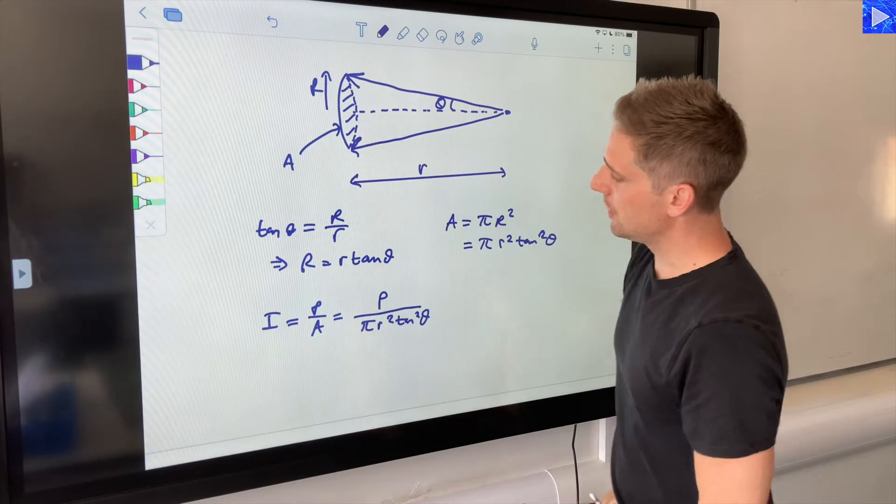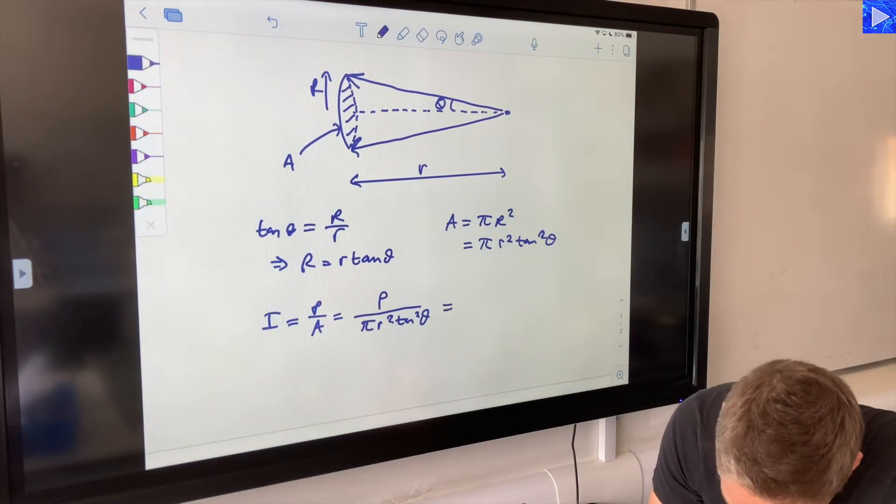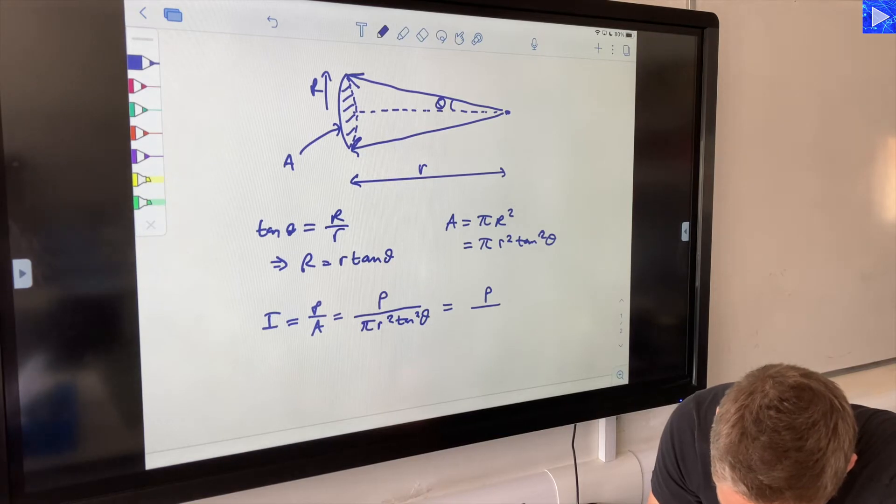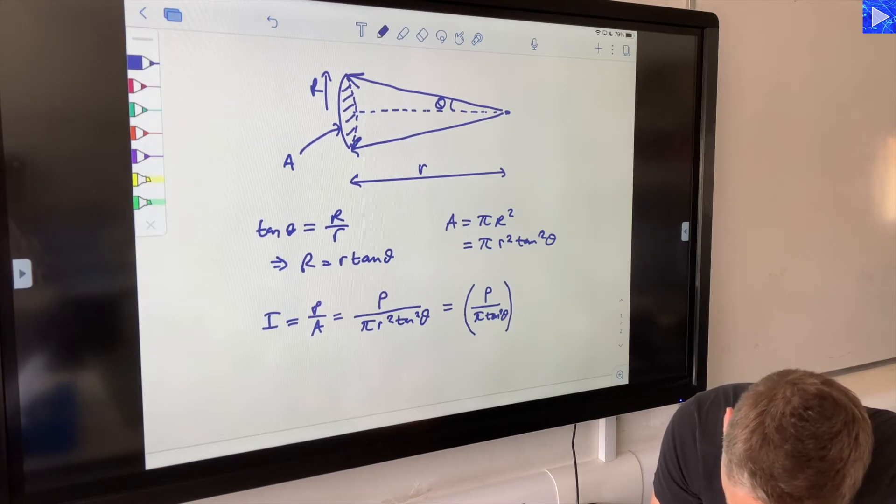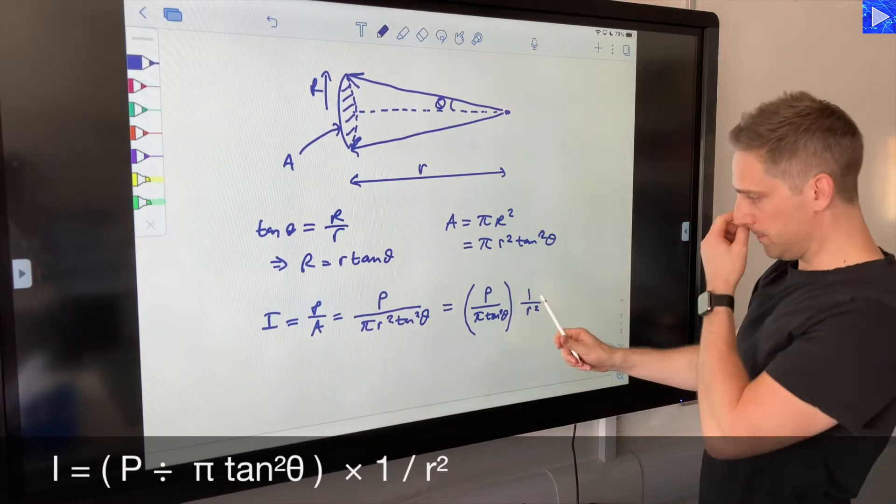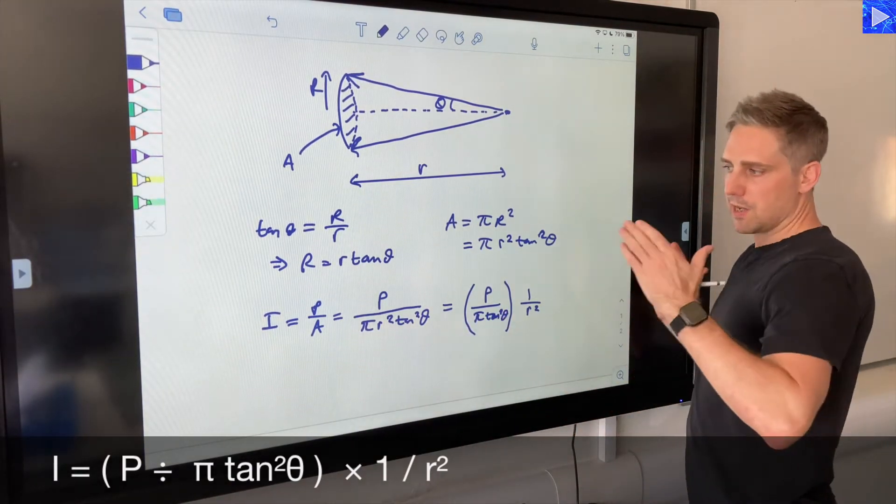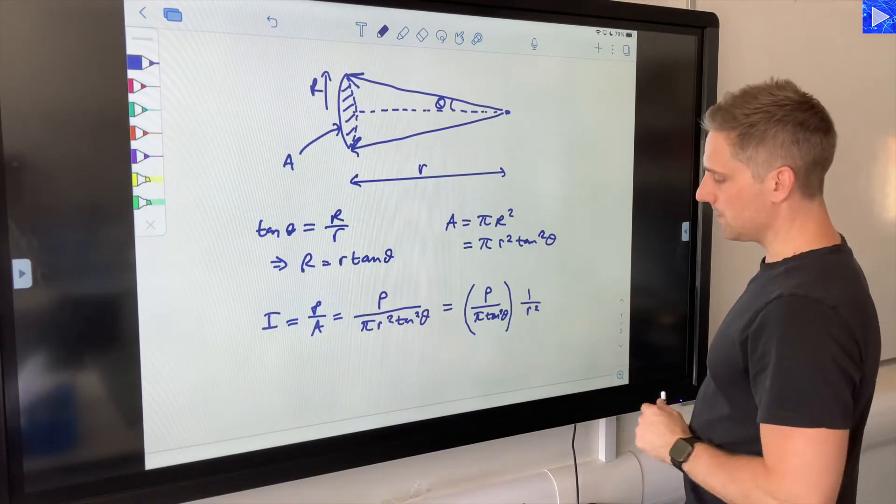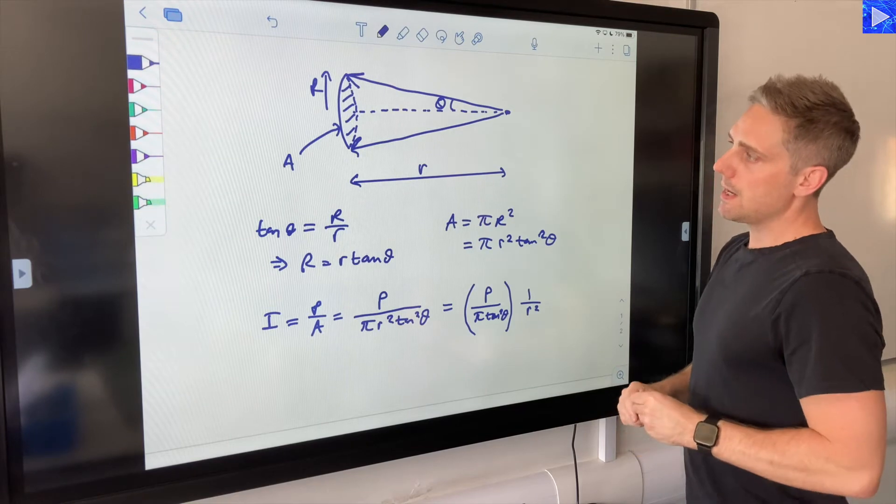So we can write that as P over pi tan squared theta in brackets. We can multiply that by one over r squared, or r to the minus two. So this is the equation that we'll be putting up to the test. That's based on the geometry of the problem.